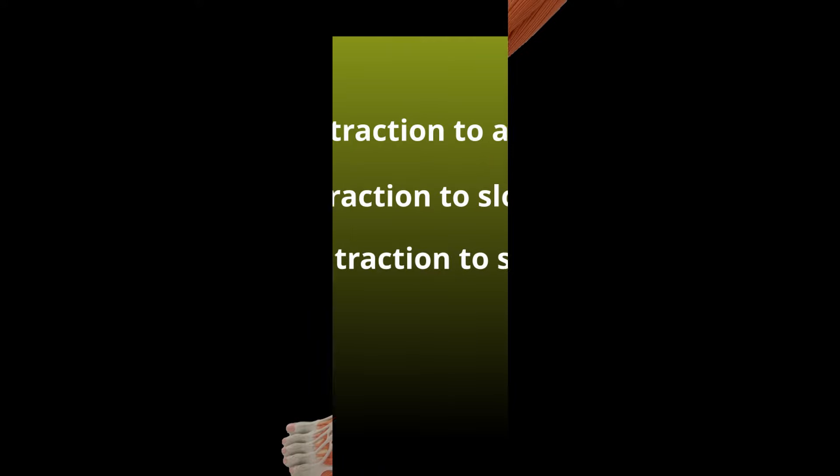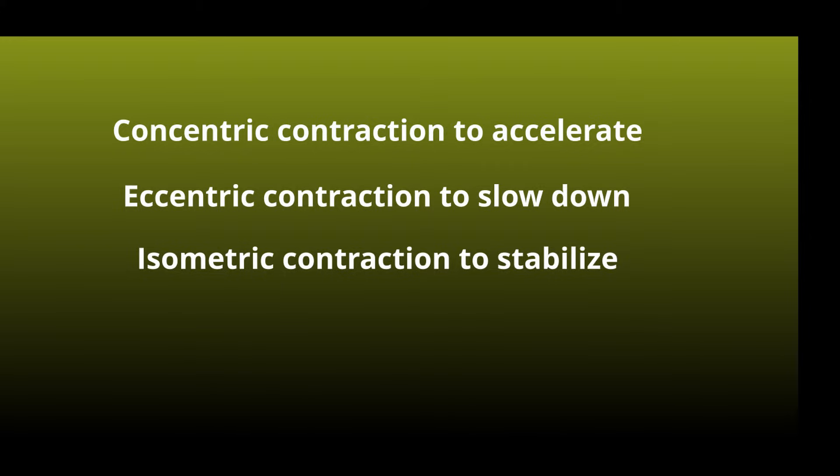During gait, muscles perform three vital functions. Concentric muscle contractions are used to accelerate a segment. Eccentric contractions to slow it down. Or isometric contractions are used to stabilize.